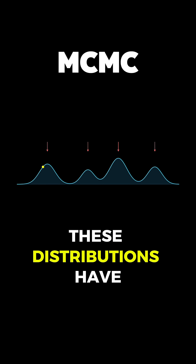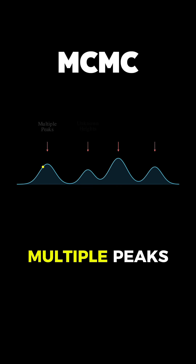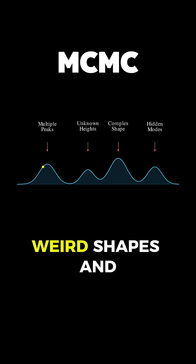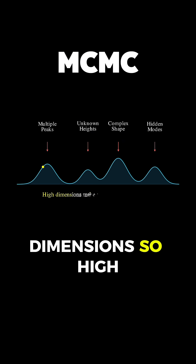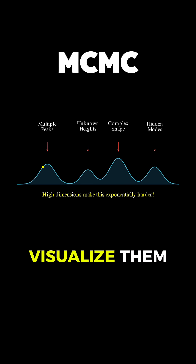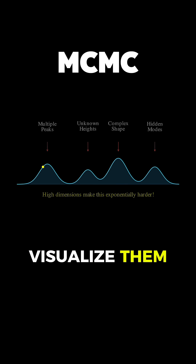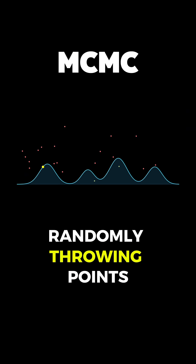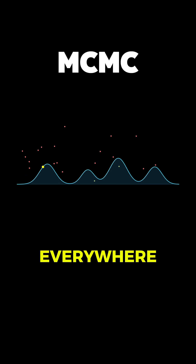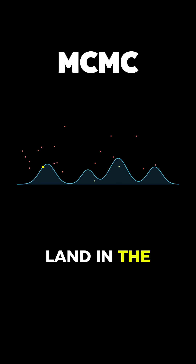These distributions have multiple peaks, weird shapes, and often exist in dimensions so high we can't even visualize them. Traditional sampling methods try to cover the entire space randomly, throwing points everywhere, and hoping some land in the right spots.